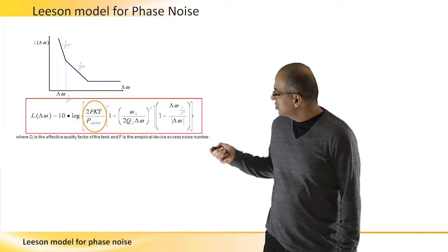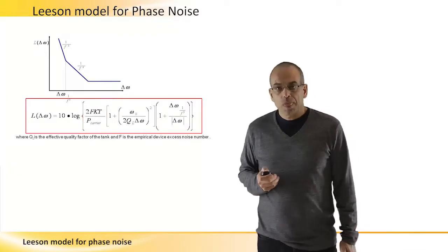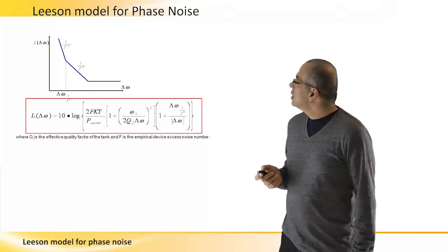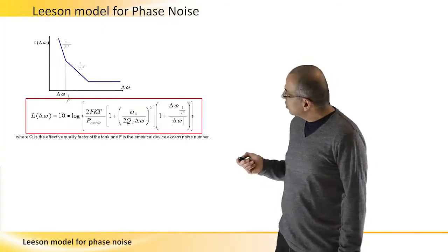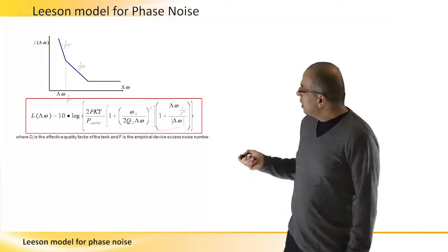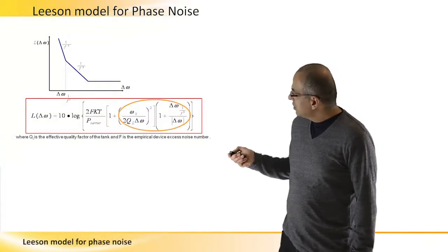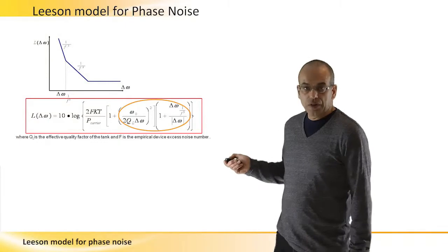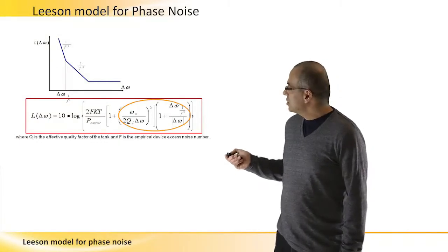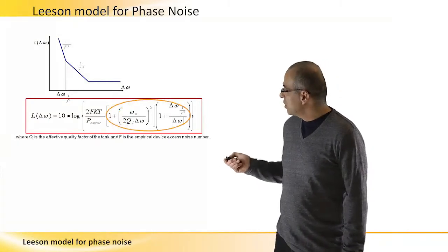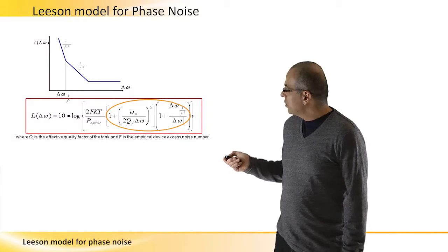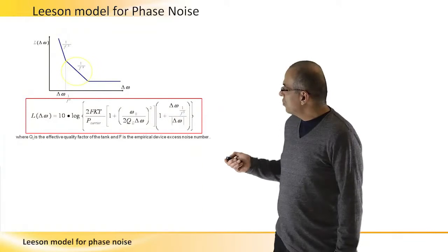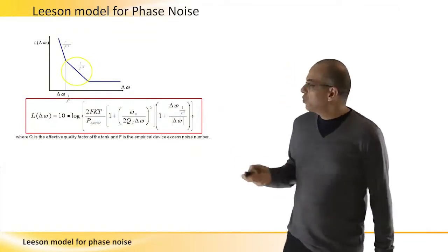But when delta w becomes small enough, or when we get close enough to the carrier, this term right here, the cubic term, starts to take effect and actually makes this expression right here bigger and bigger than one, so it has a 1 over f squared performance like we see here.